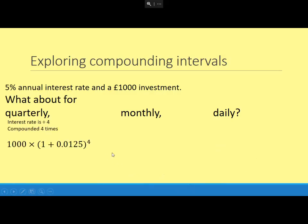If it's quarterly, that 5% gets divided by 4, and then divided by 100 to get it as a decimal, added onto the 1, compounded 4 times.